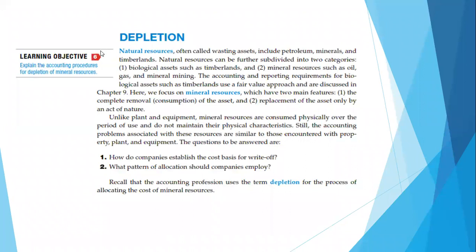Kemudian depletion. Depletion ini adalah penyusutan tetapi untuk natural resource, misalnya tambang. Karena fisiknya terlihatnya tanah, tapi tanah itu dibeli untuk digali di dalamnya. Jadi ada batu bara, ada timah nikel, ada emas, ada minyak bumi. Jadi ketika perusahaan itu membeli tanah untuk ditambang di dalamnya, maka harus dilakukan yang namanya depletion.